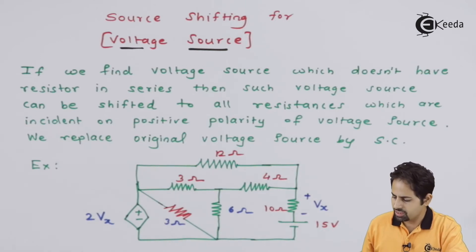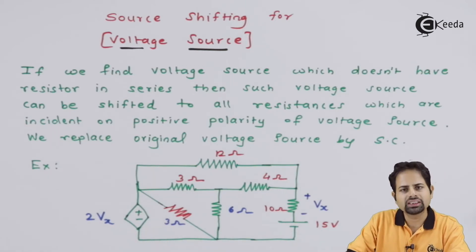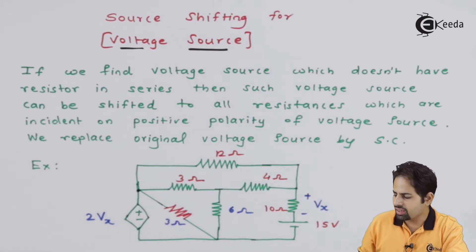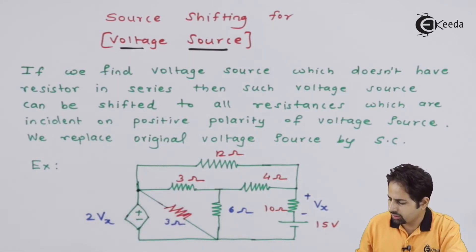So in such cases when there is no such series resistance, what we do across these terminals or we can consider this node. See at this node which are the resistance branches which are coming together.